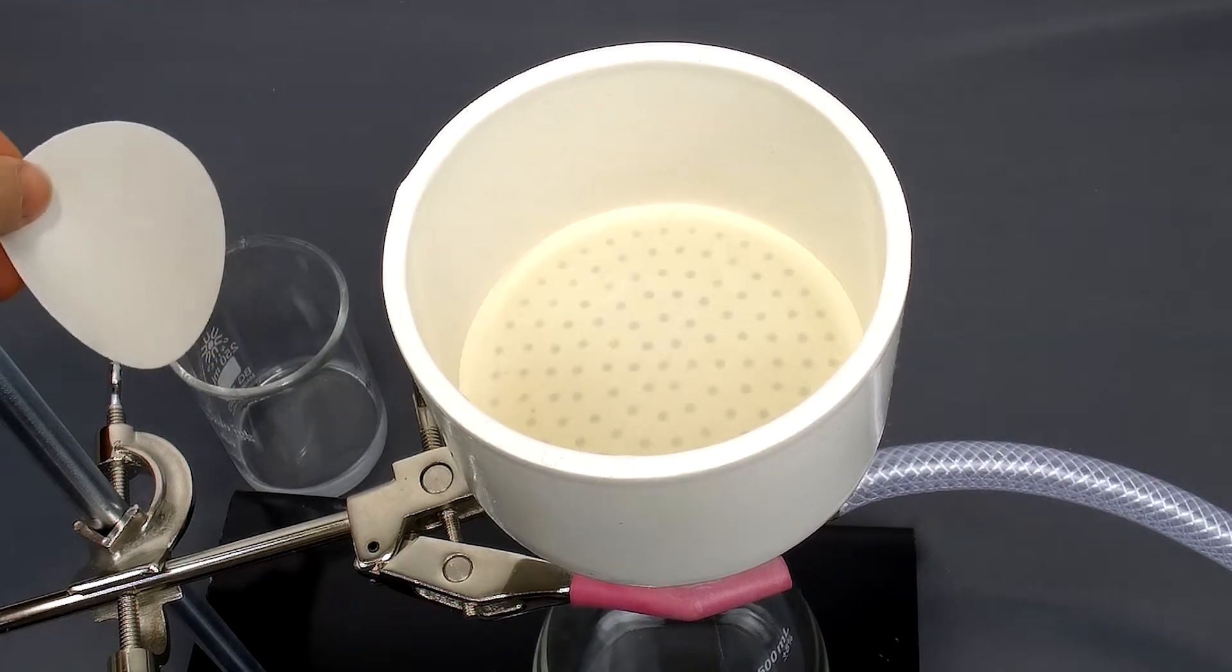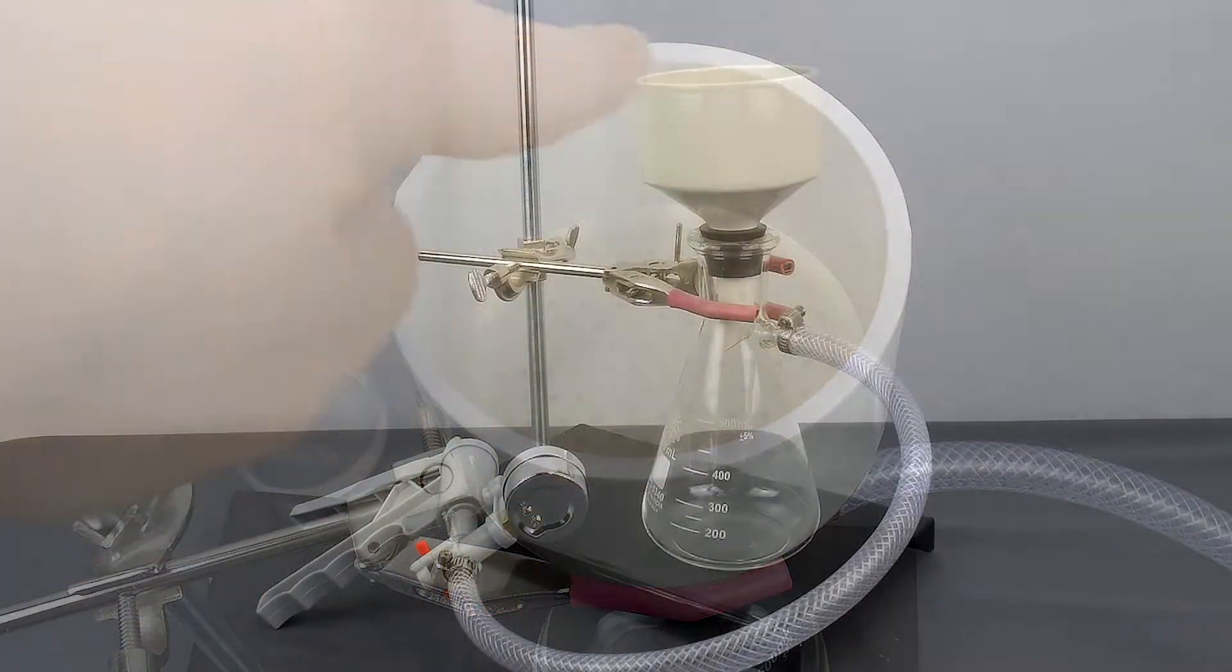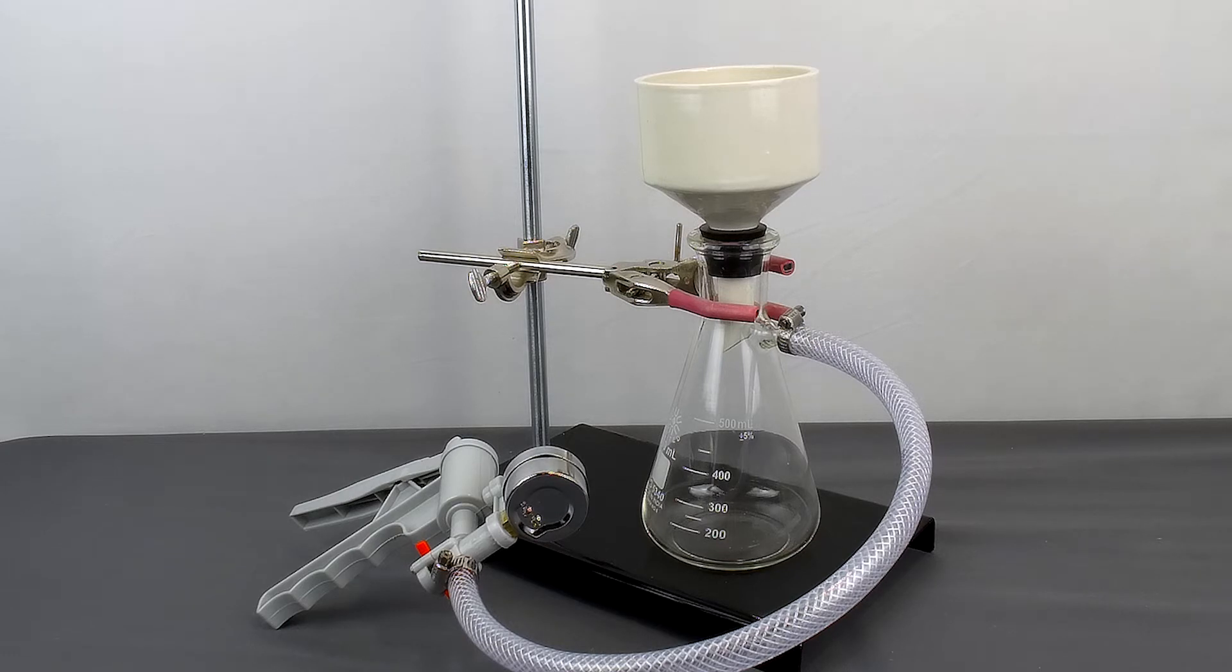To prepare for the setup, I just took one of the included filtering papers, soaked it in deionized water, got it all wet, and then placed it on the inside. Here's your complete filtering flask apparatus all set up and ready to go.